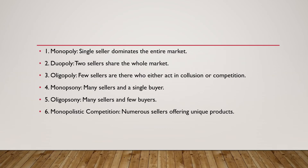Under imperfect competition, the following market types exist: monopoly, duopoly, oligopoly, monopsony, oligopsony, and monopolistic competition.